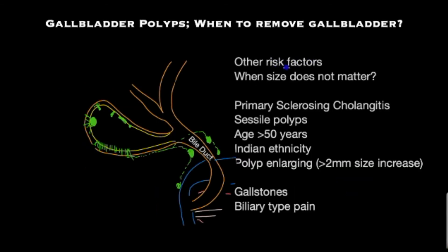Now let's look at other risk factors where the size of the polyp does not matter. There is an inflammatory bile duct condition called primary sclerosing cholangitis, associated with a very high risk of gallbladder cancer. In the presence of this condition — called PSC — and a polyp, the gallbladder should be removed.